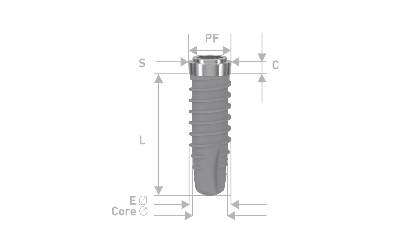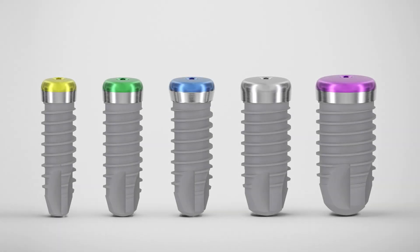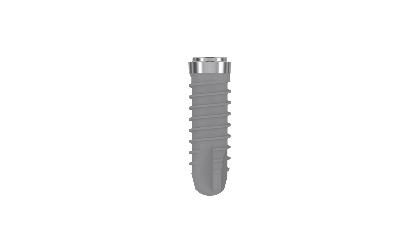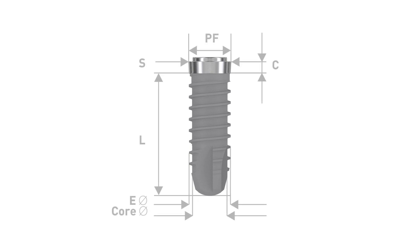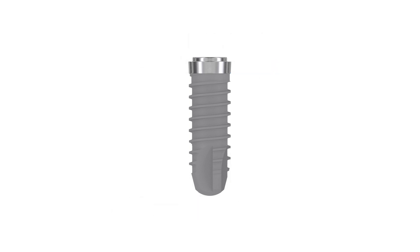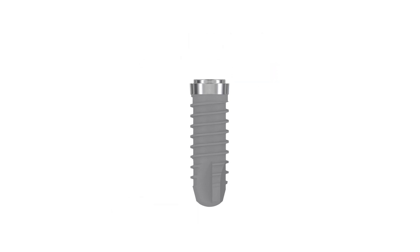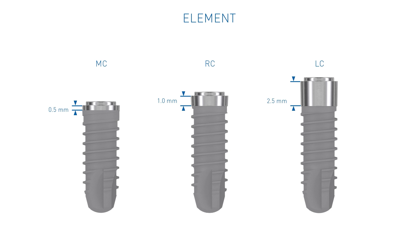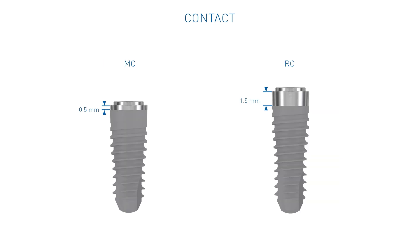The implants are defined by their platform size, which refers to the implant-abutment connection. Each platform diameter is color-coded and therefore easily identifiable. The indicated collar height refers to the height of the machined part of the implant. Element implants are offered with a minimized collar, a regular collar, and a long collar, while contact implants are offered with a minimized and irregular collar.